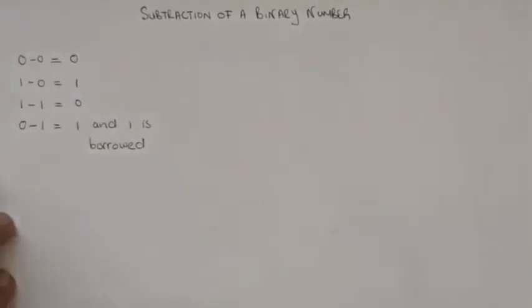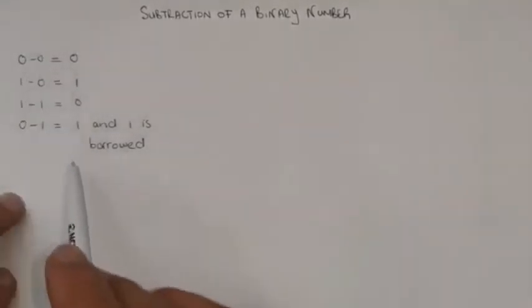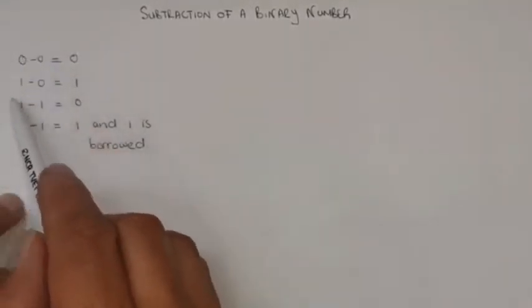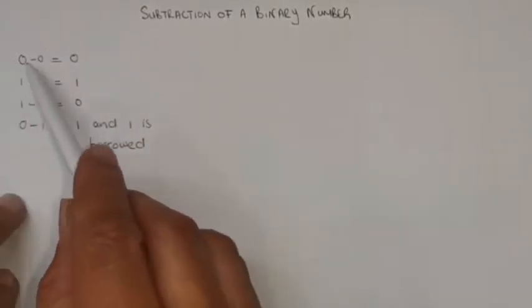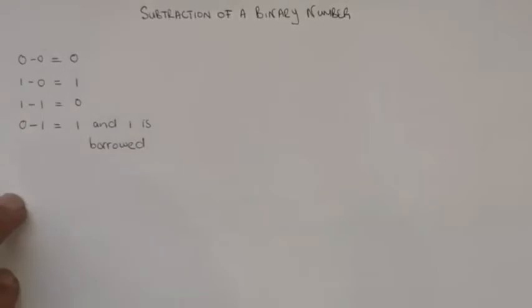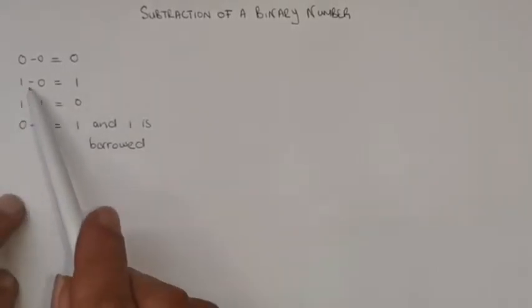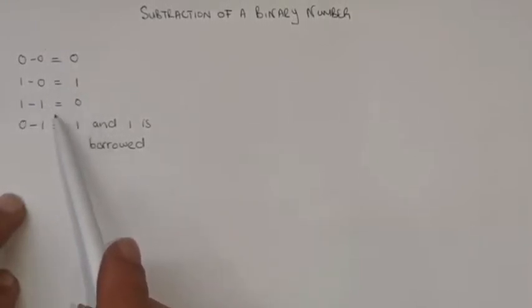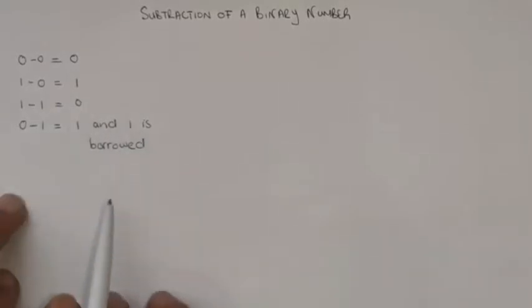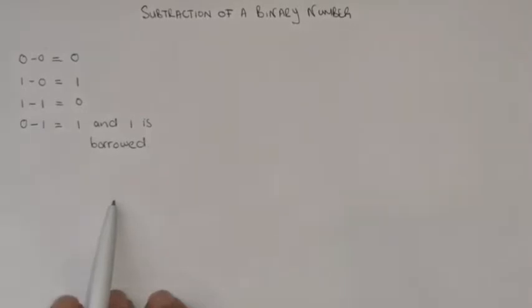The first three rules make sense in the same way as normal decimal subtraction: 0 minus 0 is 0, 1 minus 0 is 1, and 1 minus 1 is 0. The only one that doesn't make sense is the fourth one, but I'm going to show you how we use it in the actual calculation.